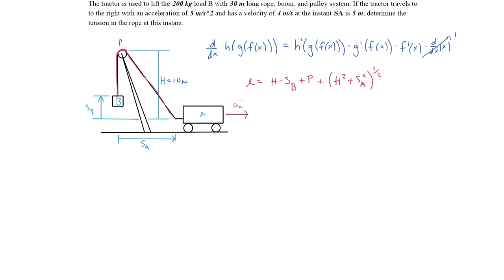This gives us the total length of the rope from B to A. Now we take the time derivatives of this equation twice to find the accelerations at A and B. L is a constant — just the total rope length — so its derivative is zero. H is also a constant representing a fixed height, so its derivative is also zero.